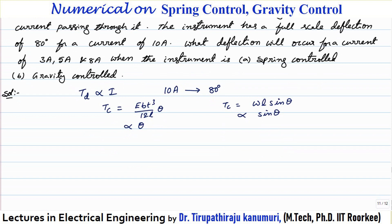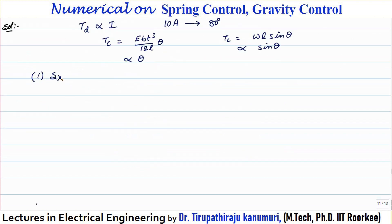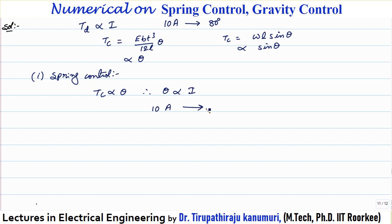For spring control, Tc is proportional to theta, therefore theta is proportional to current. The scale is uniform. For 10 amperes, 80 degrees is produced. For 3 amperes, the deflection is 3 multiplied by 80 divided by 10, which equals 24 degrees.